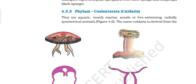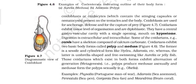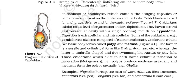This phylum includes two distinct types of individuals: the polyp and the medusa. The polyp is sedentary — it is a tube-like structure with a mouth surrounded by a circle of tentacles. It represents the asexual reproduction stage. In Cnidarians, the asexual reproduction stage is represented by Hydra.